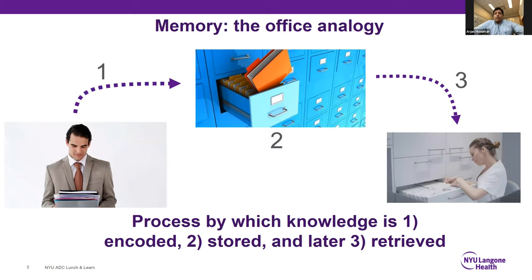One way to think about memory is the office analogy. I often use this analogy to describe to patients how I think about memory from a scientific perspective. The definition of memory is the process by which knowledge is encoded — one — stored — two — and later retrieved — three. It's a three-step process. The information to be remembered is a file. You put that information into the file — that's encoding. Then you bring it, step two, to the file cabinet for memory storage. And later on, when you need that information, you need to go to that file cabinet efficiently and get that information back.